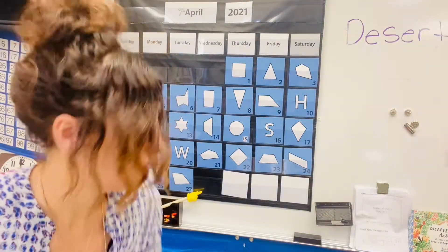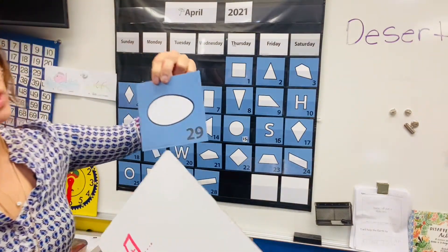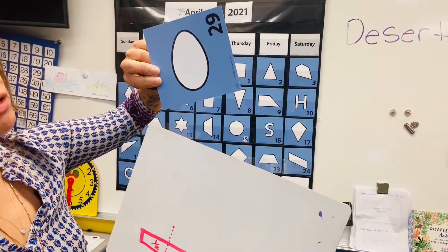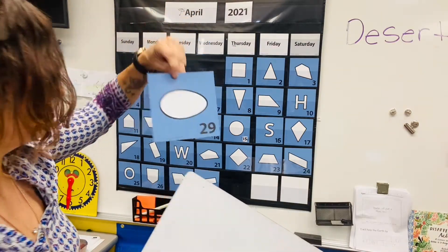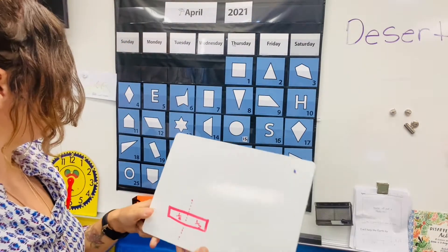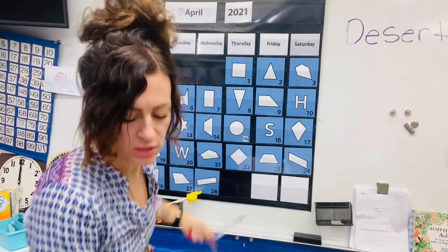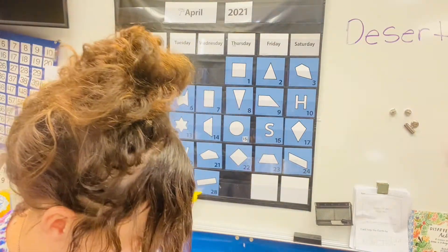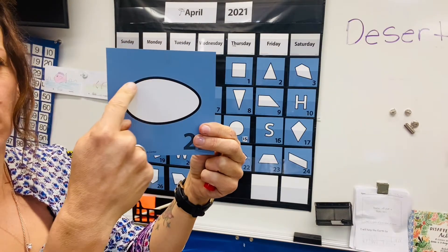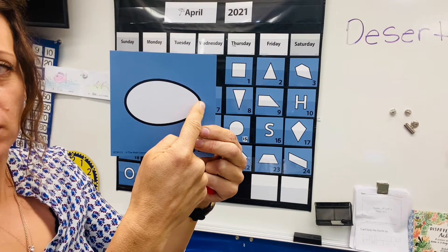And let's see what our shape is today for Thursday. Today is the 29th. What shape is that? An oval. Looks like an egg. So let's draw an oval and see if we can make that symmetrical. Now, something I noticed about this egg before we do it — it looks like this side is a little wider and this side is a little bit more narrow. Do you see that?